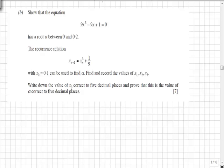In part b we're first asked to show that the equation has a root between 0 and 0.2. So if we take our x values of 0 and 0.2 and substitute them into our f(x) which is 9x³ - 9x + 1, we find that substituting 0 in we get 1 and substituting in 0.2 we get -0.728.